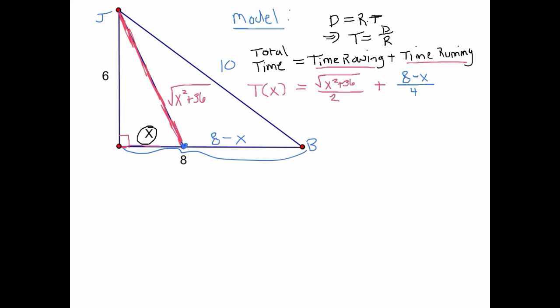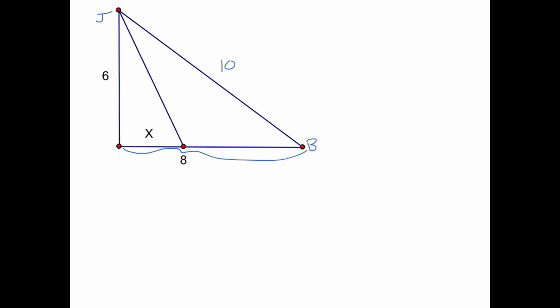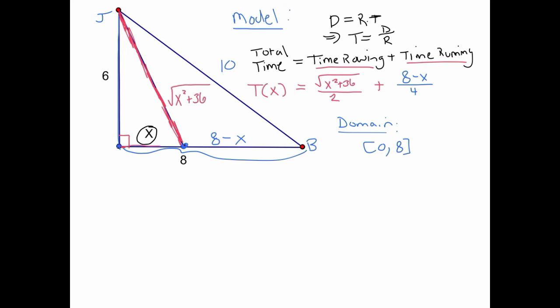Now we have a function T(x) that tells us the time for any arbitrary landing distance x. Our goal is to use calculus to find the minimum value of this function. Let's talk about the domain: the smallest x can be is 0, where she rows directly to shore and then runs. The largest x can be is 8, where she rows the full hypotenuse of the big triangle to the boathouse. So the domain is [0, 8].